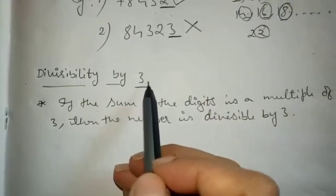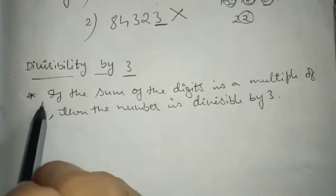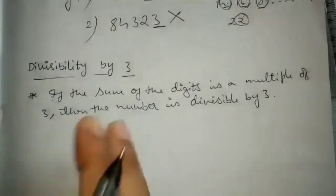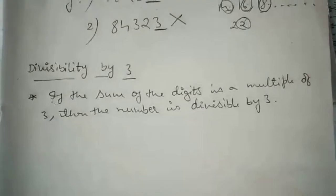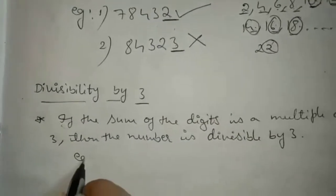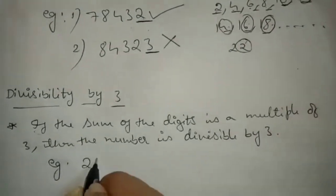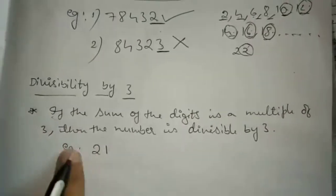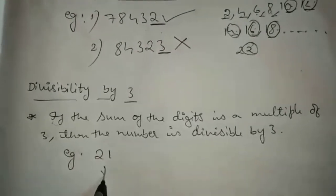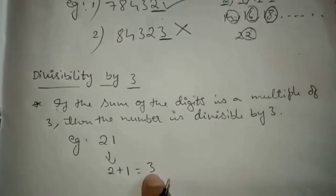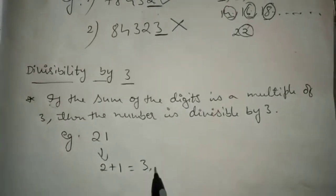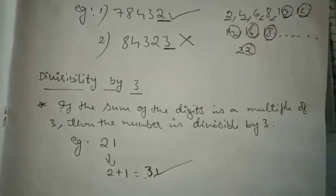Next, divisibility by 3. If the sum of the digits is a multiple of 3, then the number is divisible by 3. For example, take the number 21. You have to add the digits: 2 plus 1 equals 3. Since 3 is a multiple of 3, we can say that 21 is divisible by 3.